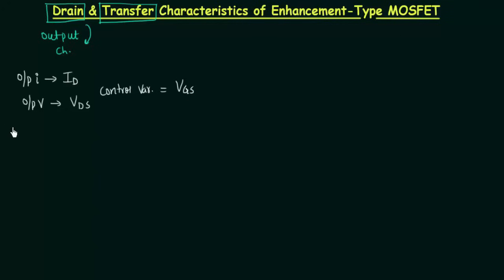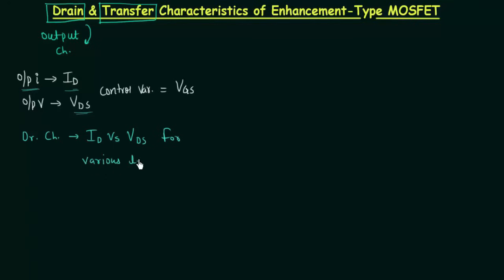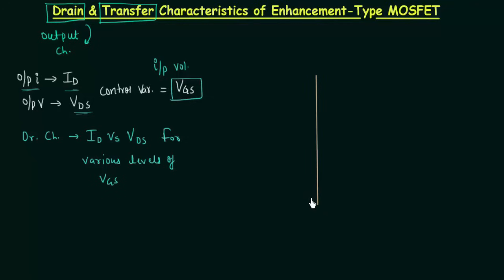The drain characteristics is the plot between current ID, which is the output current, and voltage VDS, which is the output voltage, for various levels of the control variable or control voltage VGS, which is the input voltage. To find the drain characteristics I will quickly draw the y-axis and the x-axis.